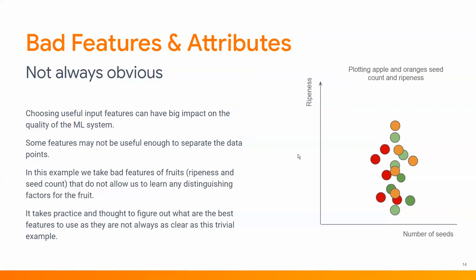What about bad features and attributes? It's not always obvious what to choose. Ripeness and number of seeds could lead to a scatterplot where there's no easy way to separate the data with a straight or even curved line — a bad choice of features. And it's not always as simple as apples and oranges. Imagine those brain tumors — what features would you use to distinguish a positive from a negative result? This is known as feature engineering: finding the set of features that give you the best separation in data, and that's what people get paid a lot of money to figure out.